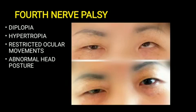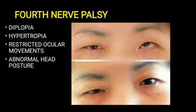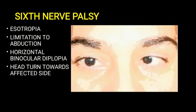The fourth nerve (trochlear nerve) supplies the superior oblique, responsible for intorsion and depression of the eyeball. When affected, there is restricted ocular movement and the eye goes into hypertropia due to unopposed inferior oblique action. On downgaze the patient manifests with diplopia, and to correct it, the patient adopts an abnormal head tilt. The sixth nerve (abducens nerve) supplies the lateral rectus. When affected, the patient cannot abduct the eye, resulting in esotropia. On horizontal binocular movement the patient develops diplopia and turns the head toward the affected side.